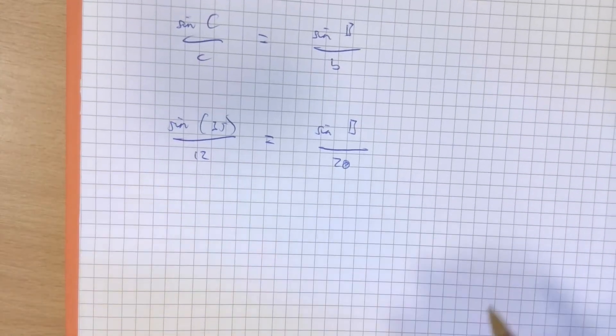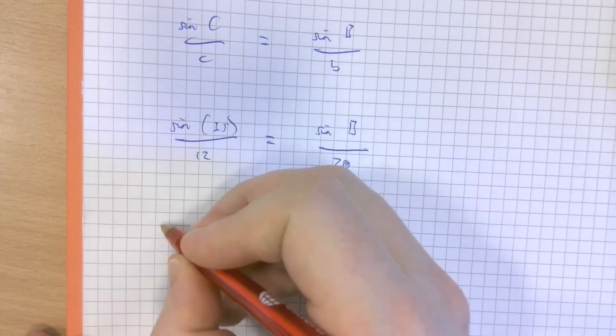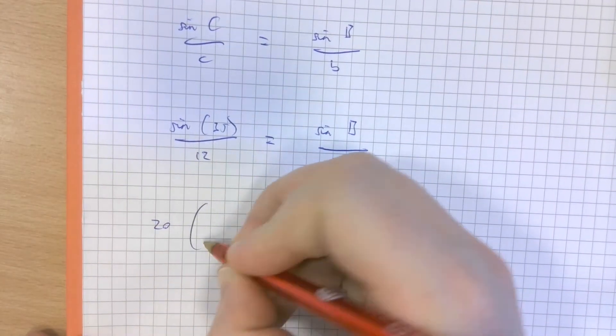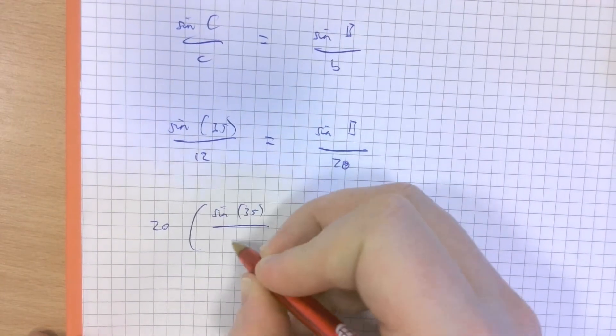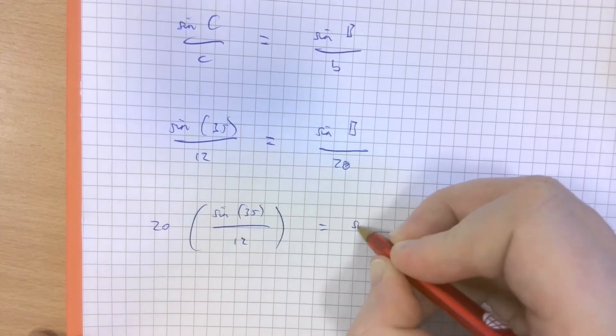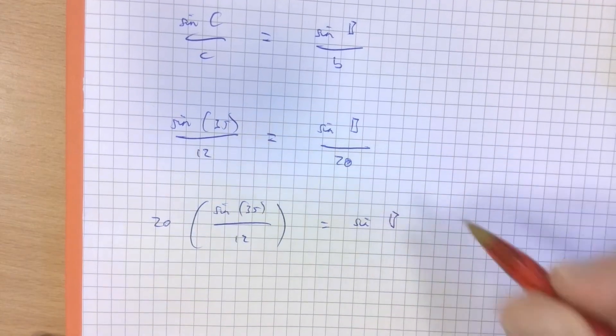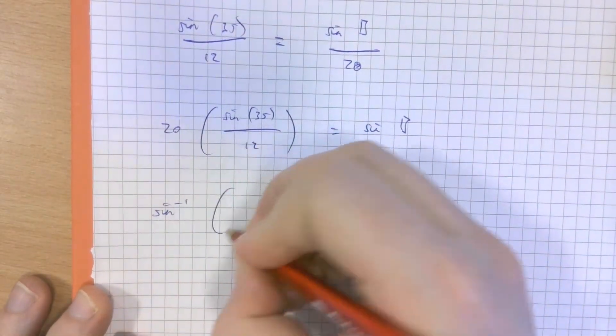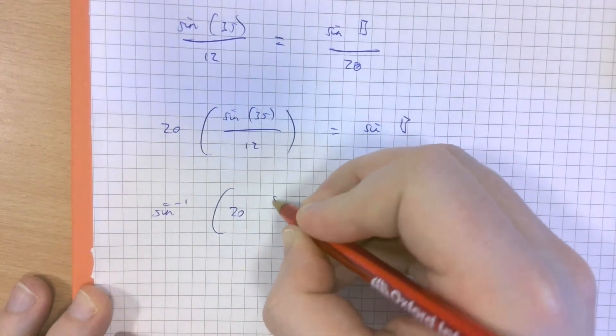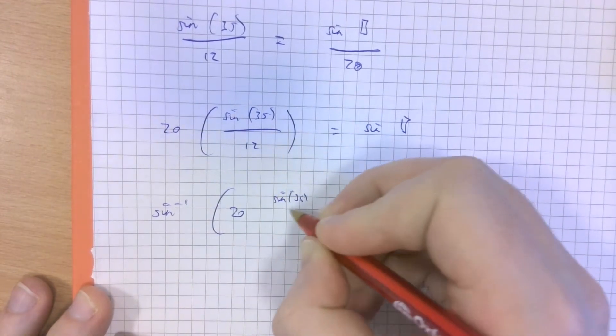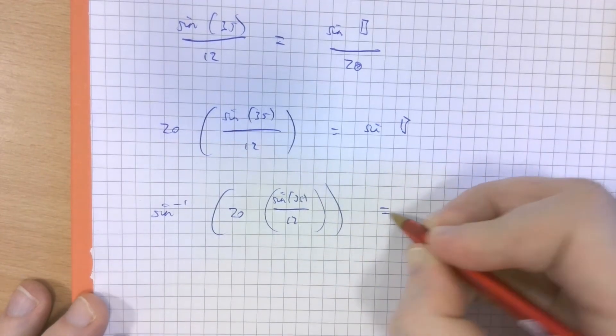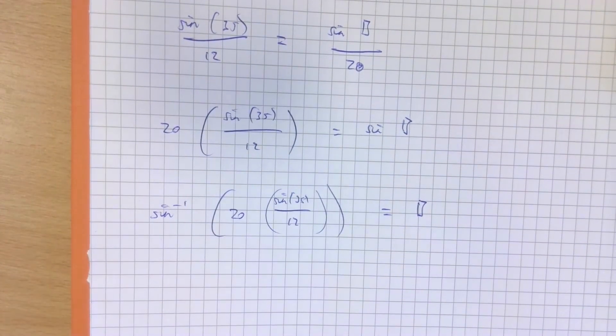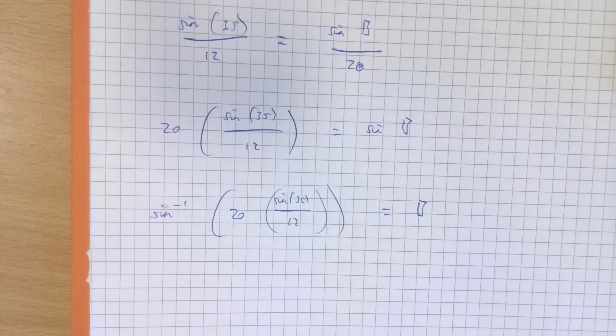So timesing by 20 both sides is going to get us closer to this being on its own. And equals sine of B. And then we're going to take inverse sine of both sides. So the inverse sine of 20 times sine 35 over 12. Lots of brackets here but that's okay.